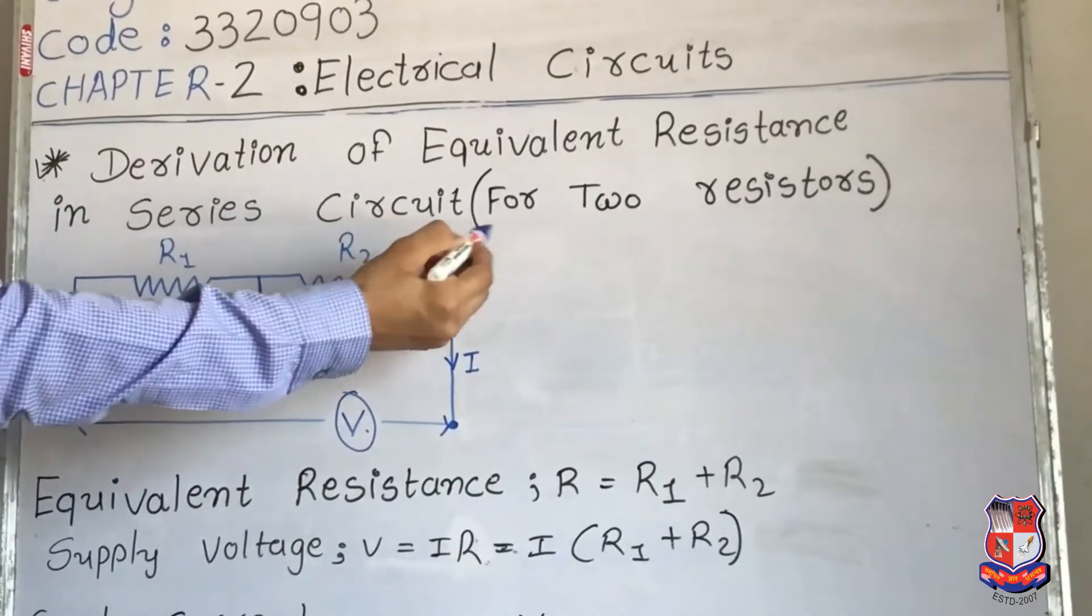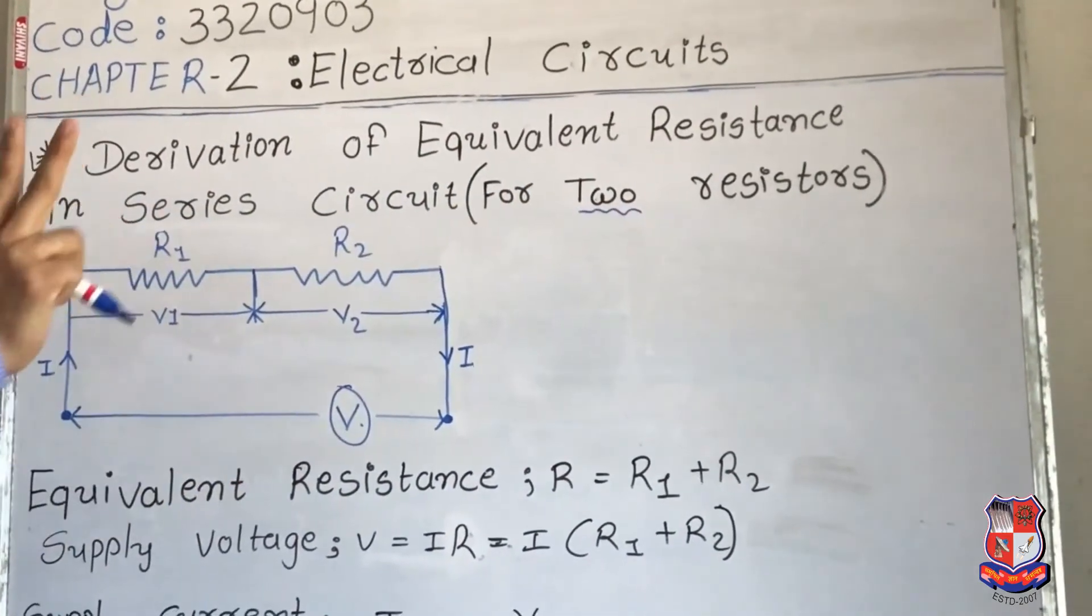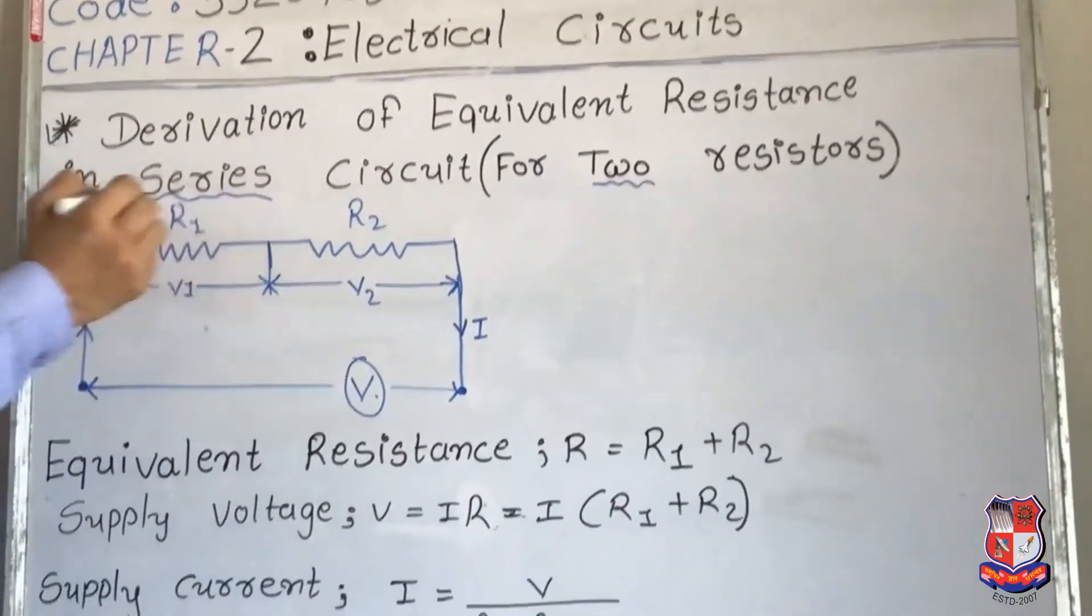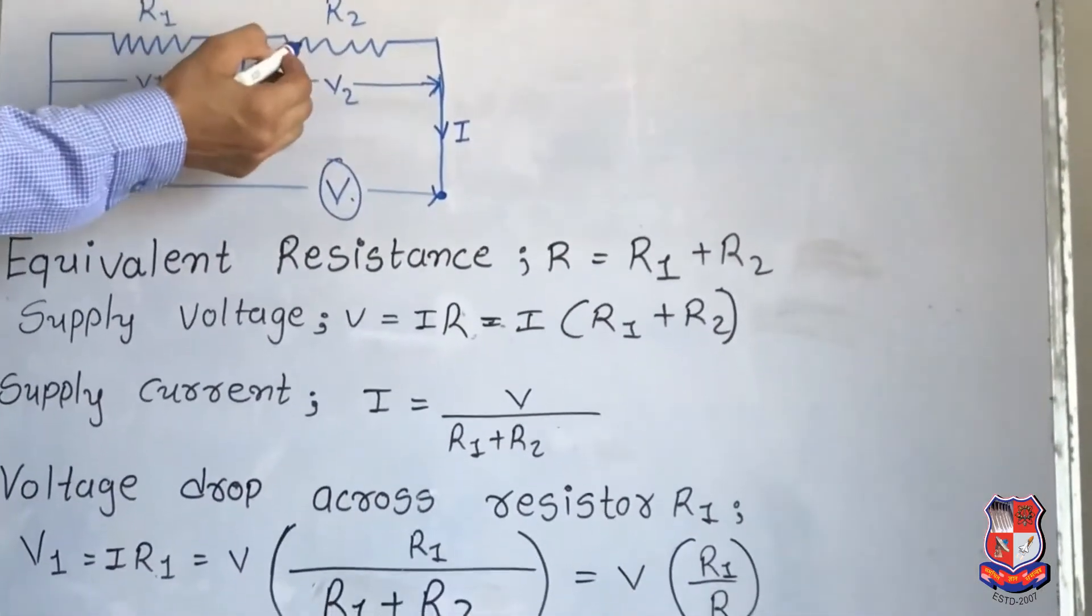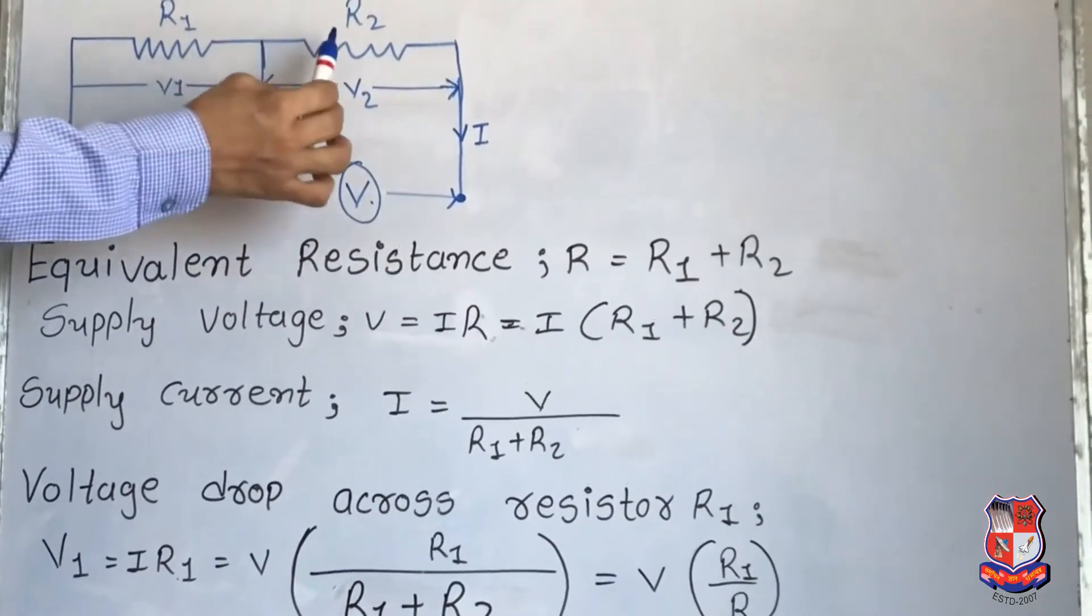Resistance is connected in series. R1 and R2 resistance are connected in series when your supply voltage is connected in front of two resistances.